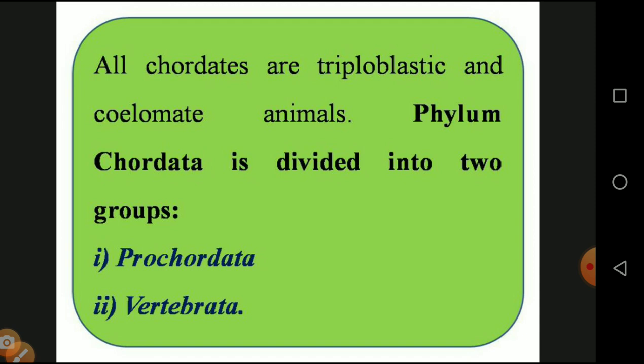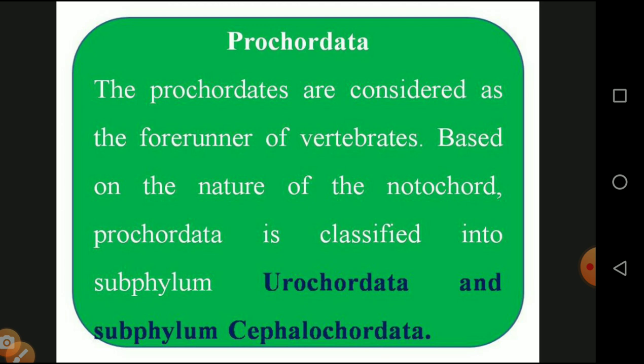Phylum Chordata is divided into two groups: Protochordata and Vertebrata. Protochordata is one category and Vertebrata contains the fully adapted organisms. Protocordates are considered the forerunners of vertebrates — they are the basic organisms in the formation of chordates. Based on the nature of the notochord, Protochordata is classified into three sub-phyla: Urochordata, Cephalochordata, and a third group.